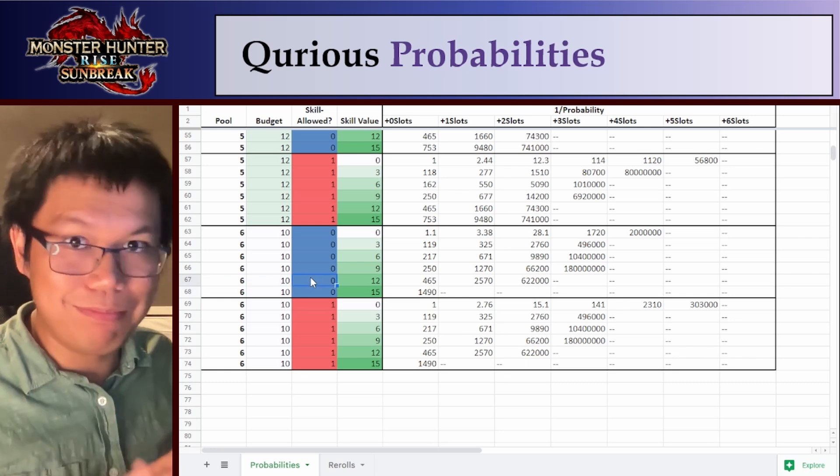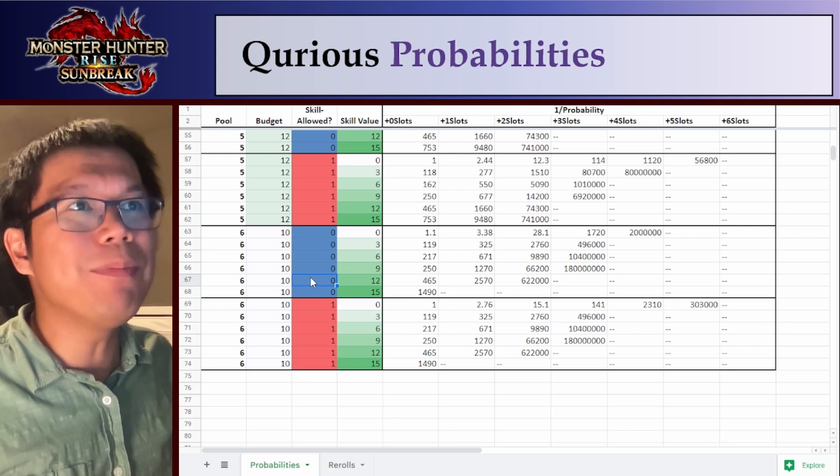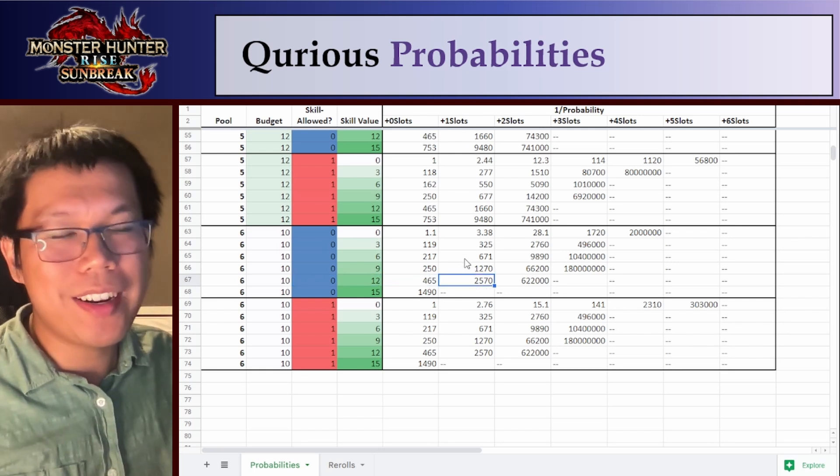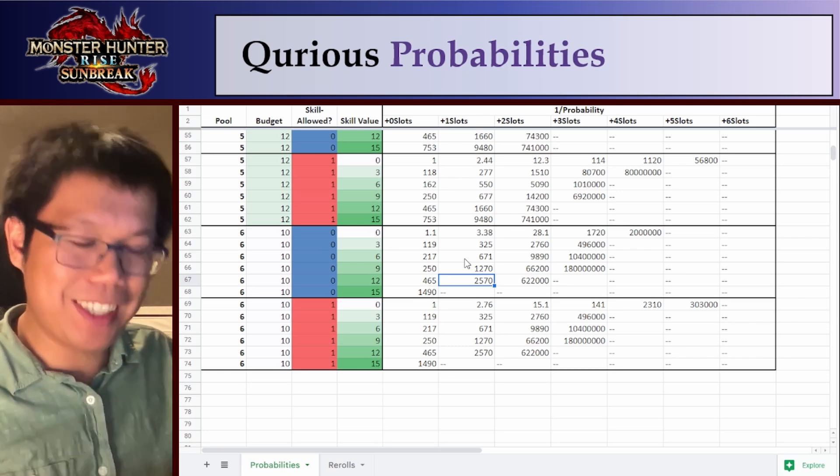Skill allowed is whether or not we're allowing ourselves to lose a point in this skill. 1 means we're allowed to lose a point, 0 means we're not allowed to lose a point. So you can see this here. So for skill value 12, pool 6, skill allowed 0, skill minus allowed. No, no, you are not allowed to lose a skill. And for plus 1 slots, it'll take 1 in 2,570 is your probability.